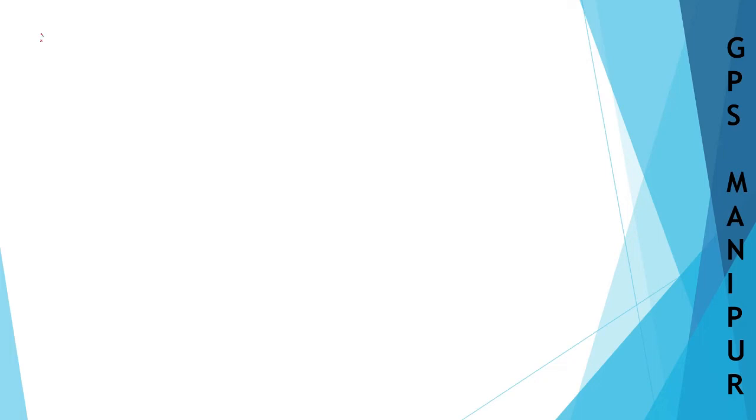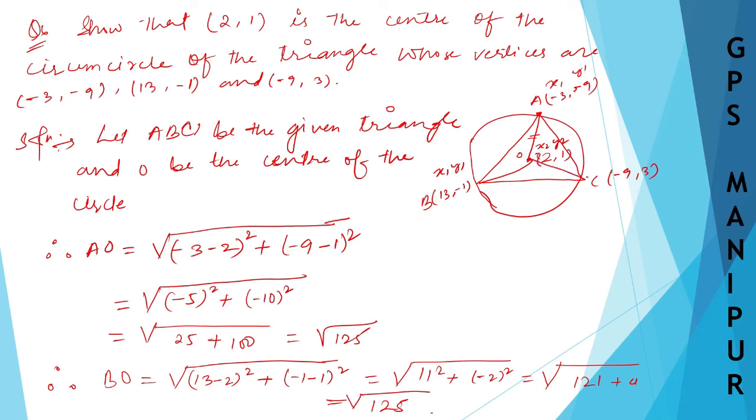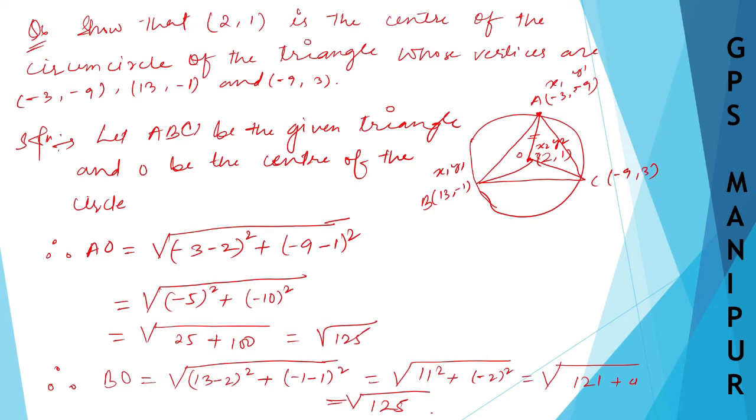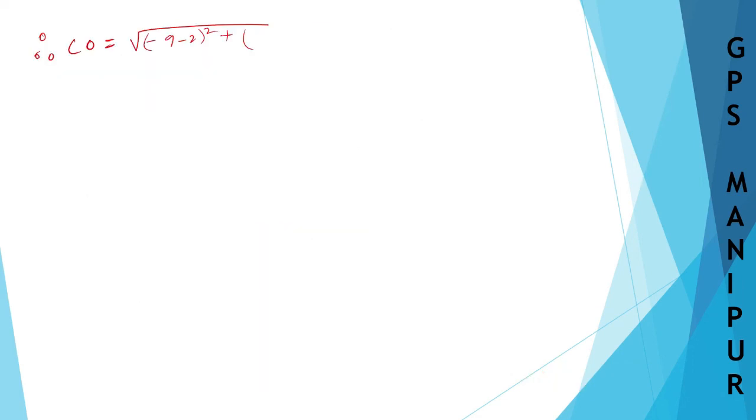Now let us find out CO. C is (−9,3) and O is (2,1). CO equals √[(−9−2)² + (3−1)²] = √[(−11)² + 2²] = √[121 + 4] = √125.